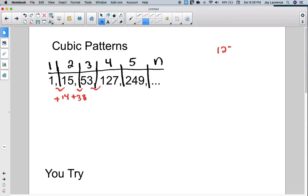53, 127 minus 53. I think it's gonna be 74. Well, this is definitely not a linear pattern. And then finally, 127, 249 minus 127 is going to be 122. Alright, so it's definitely not linear.